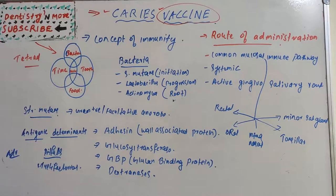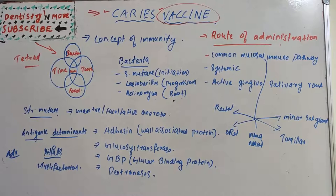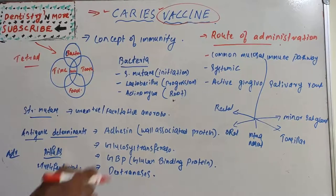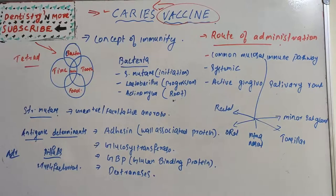Dental caries is a microbial infectious disease of teeth which results in local dissolution and destruction of calcified tissue. It is one of the most common diseases in humans and a major public health problem. A vaccine is an immunological substance designed to produce specific protection against a given disease — in this case, protection against dental caries.